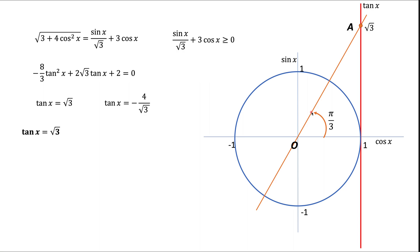In addition to π/3, any other angle that puts us on the same line — such as π/3 + π — also gives tangent = √3. In fact, adding or subtracting any integer multiple of π will also land us on this line and give tangent = √3. So the general solution is x = π/3 + πn, where n is any integer.